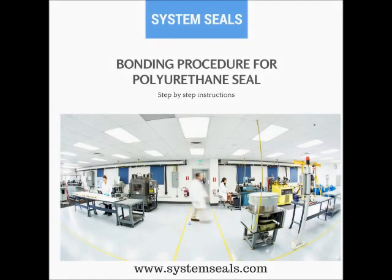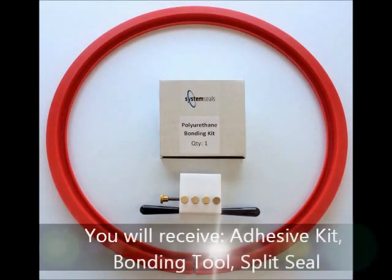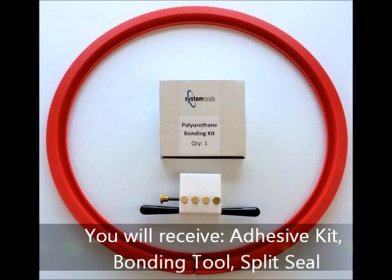This is a System Seals bonding procedure for polyurethane seal. In your package you received an adhesive kit, a bonding tool, and a split seal.